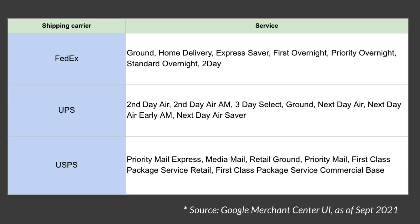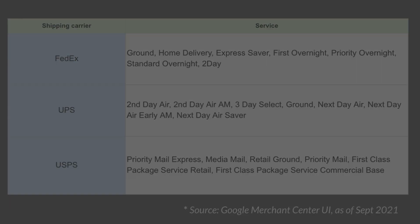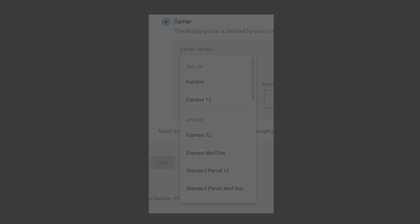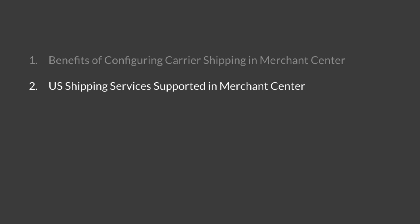If you want to see supported services in your country, start configuring a new shipping service in Merchant Center, select your country, and select carrier as the shipping method. Here's an example of the UK shipping services supported in Merchant Center.